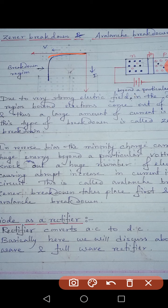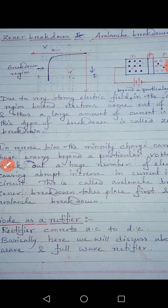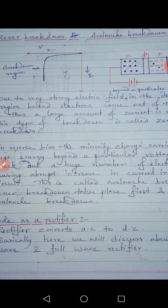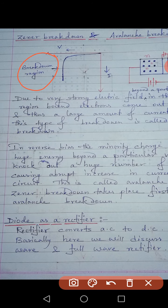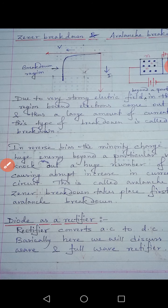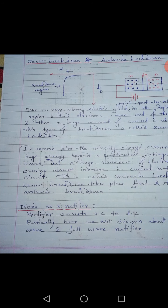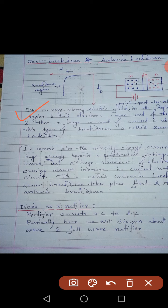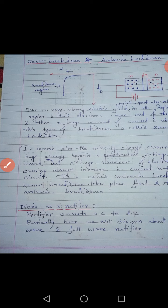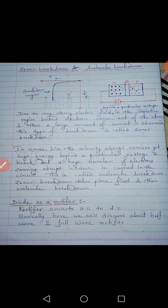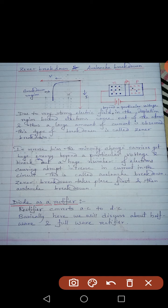In the graph, initially we get less current, but once the voltage crosses a certain value — sufficient to pull valence electrons out of the atom — we get a sharp, abrupt increase in current. This kind of breakdown is called Zener breakdown. The definition: due to a very strong electric field beyond a particular voltage in the depletion region, bound electrons come out of the atom and a large amount of current is observed.